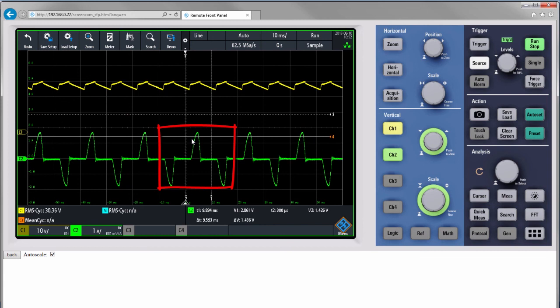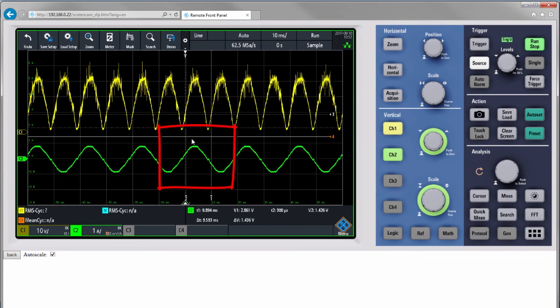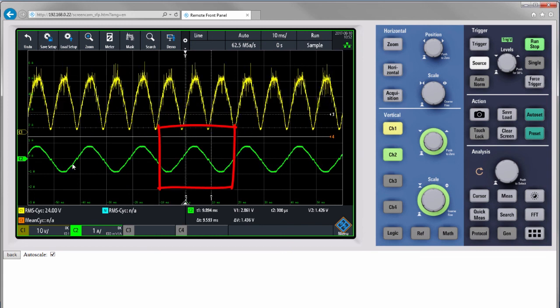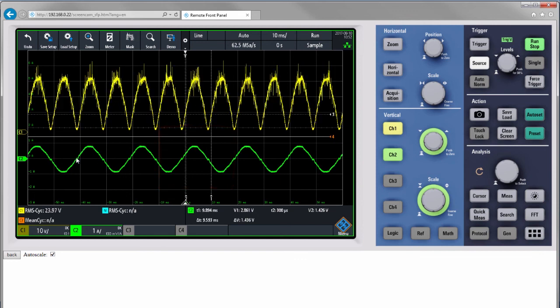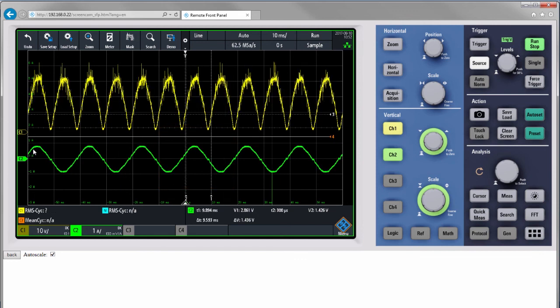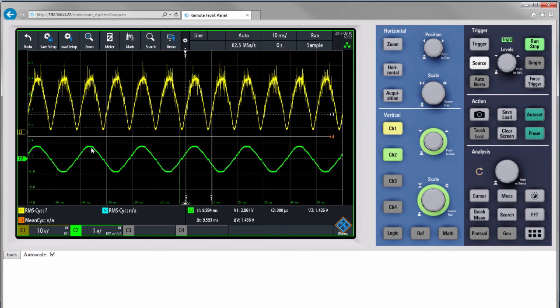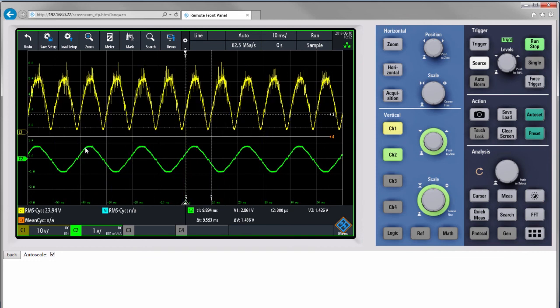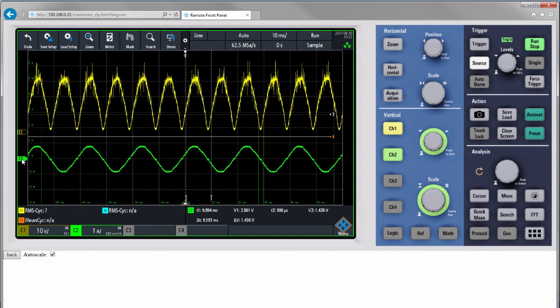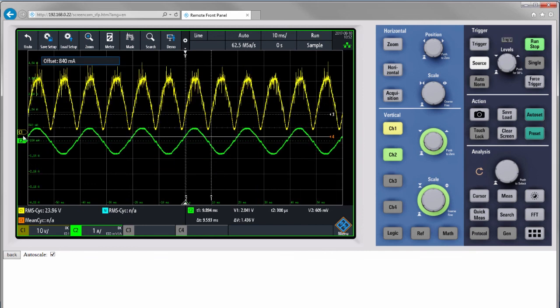As soon as I turn the PFC back on, you can see that the input current becomes a beautiful sine wave. The flat top here that you see is actually because of the line voltage waveform, which is usually flattened a little bit due to the impedance of the source.